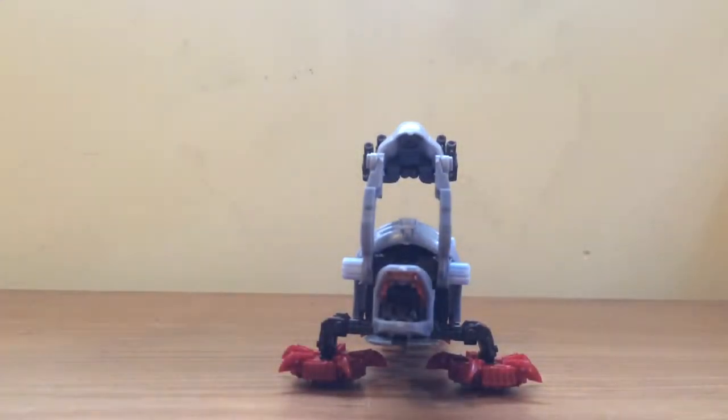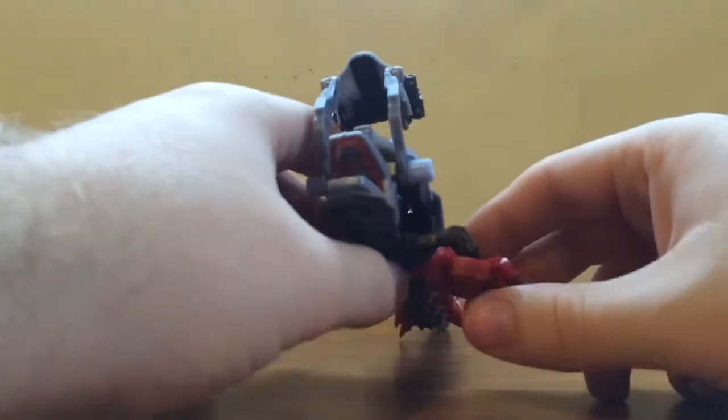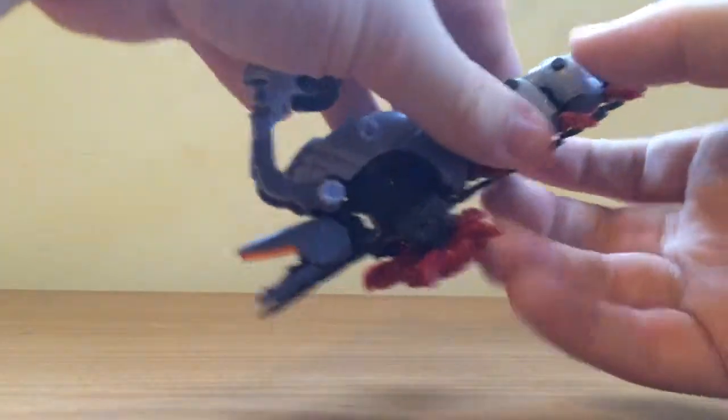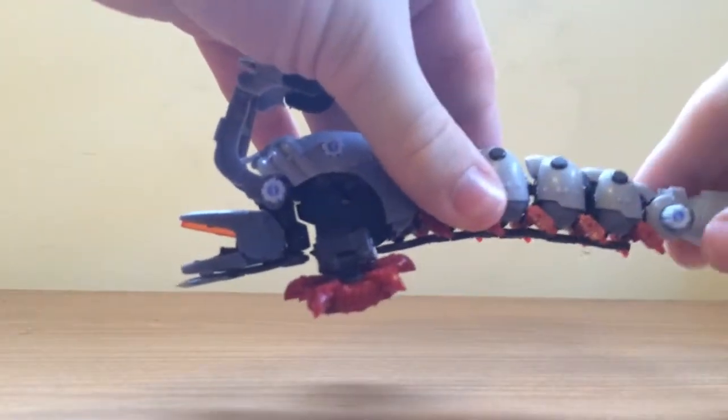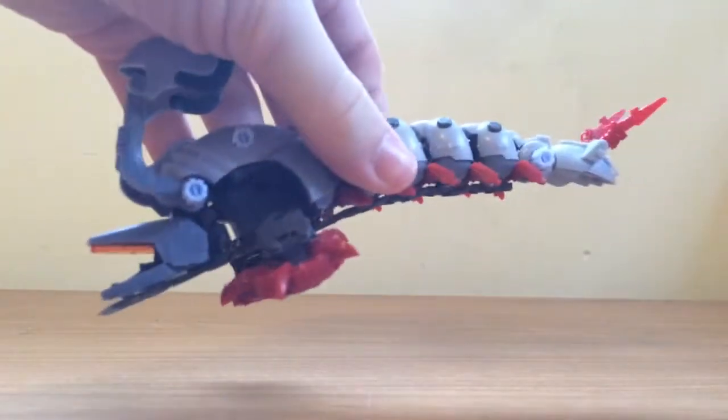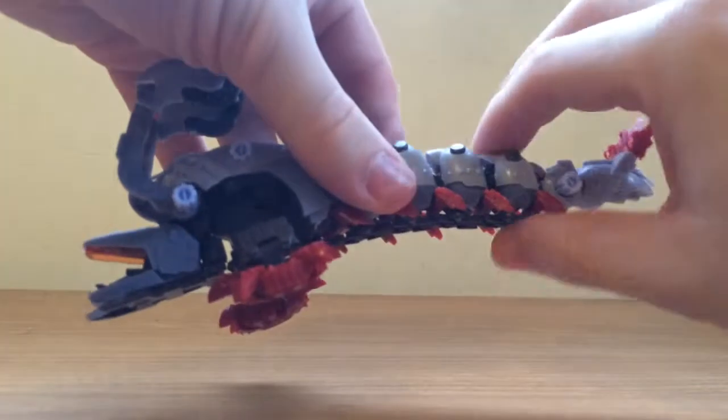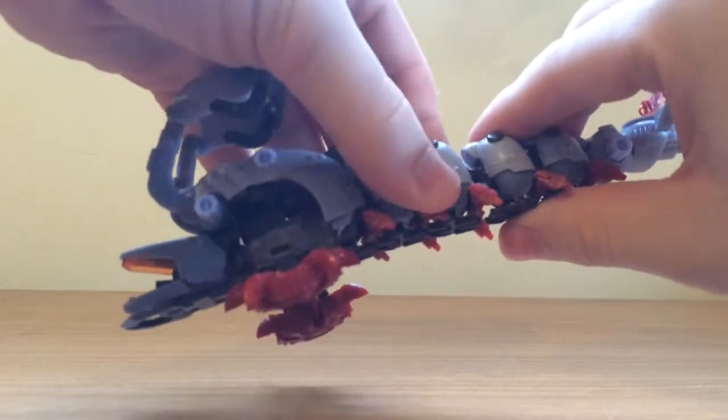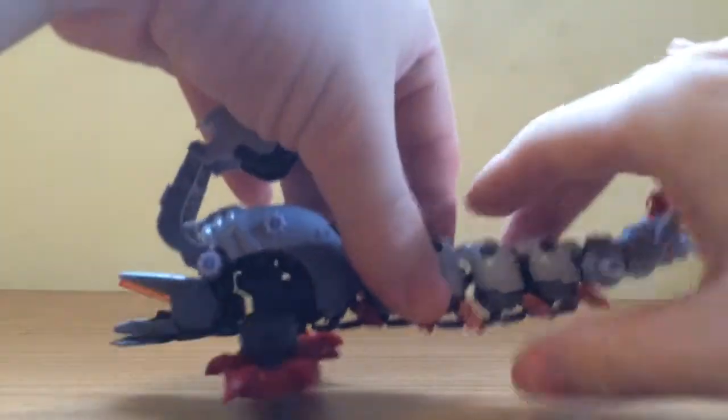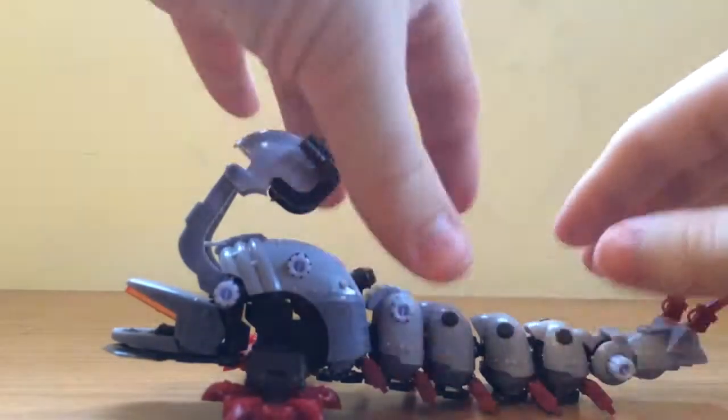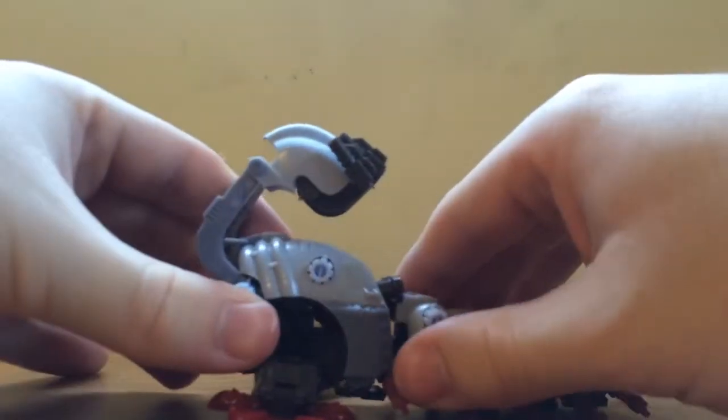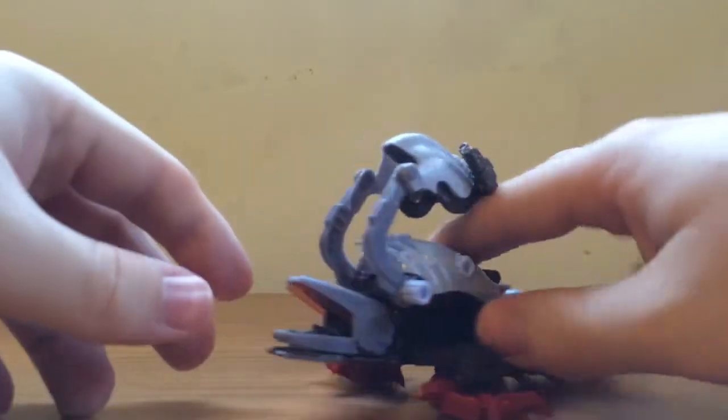Oh, and poseability. The only poseability you see is in the head and the tail. Nothing. There's nothing to write home about it. And sometimes I'll pop a ball joint off the tail for some reason. Don't know why I keep doing that. It's just silly.